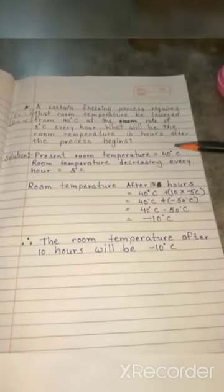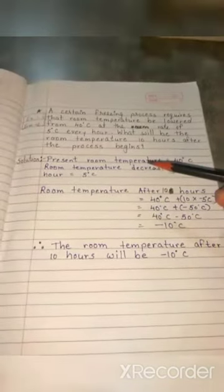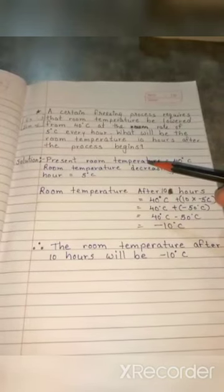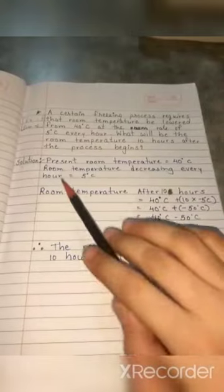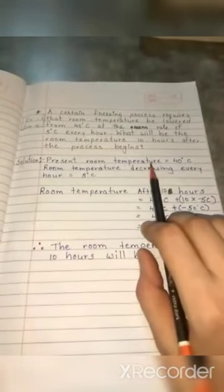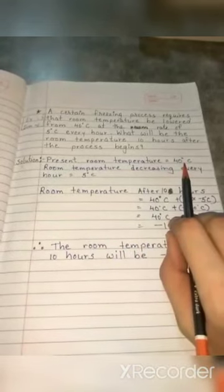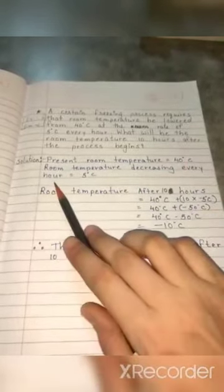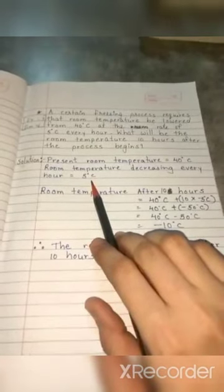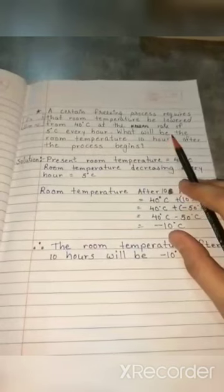Let's find out the solution for this word problem. First, we will write the information which we are knowing. What is present room temperature? The present room temperature is 40 degree Celsius, and room temperature decreasing every hour is 5 degree Celsius. This information is already given in the word problem.